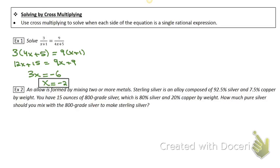Sterling silver is an alloy comprised of 92.5 percent silver and 7.5 percent copper by weight. You have 15 ounces of 800-grade silver, which is 80 percent silver and 20 percent copper by weight.